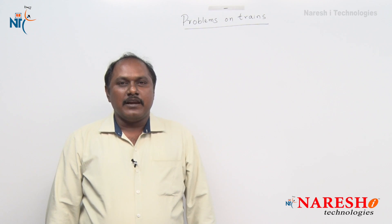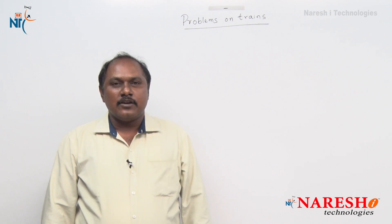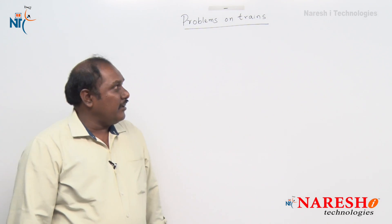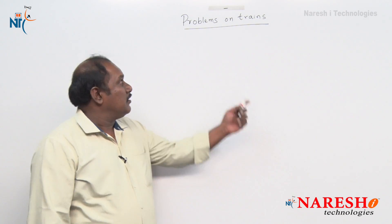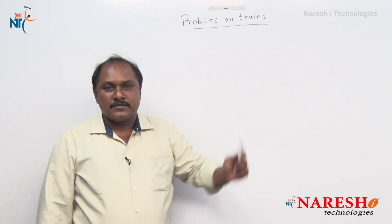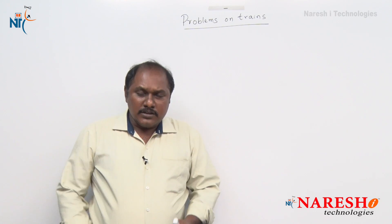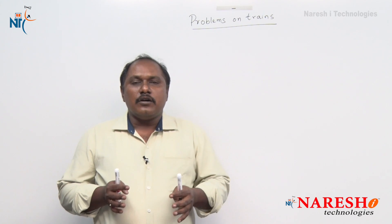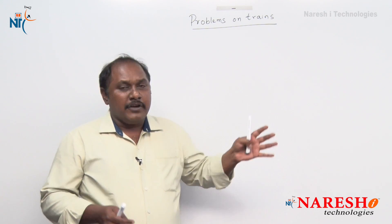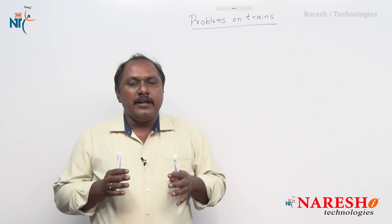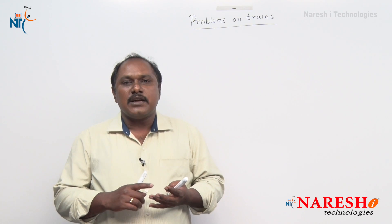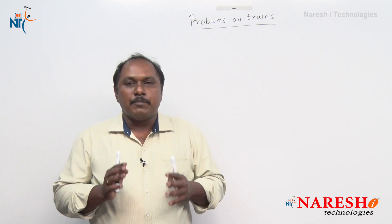Hi friends, welcome to Narayshai Technologies. Let us start a new session today in quantitative aptitude and the topic is problems on trains. This is also one of the subtopics of time and distance. In this chapter also, we find three terms in every problem: speed, distance, and time. Let us start with a problem.